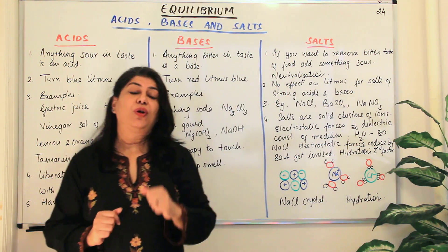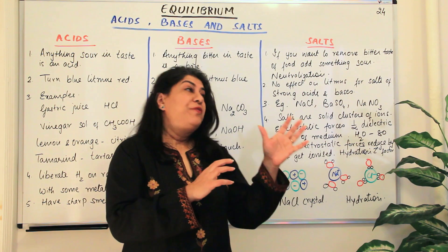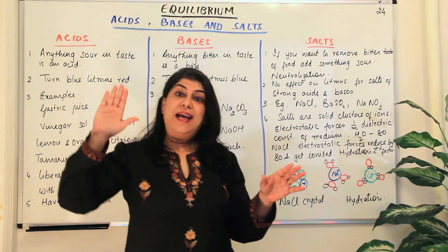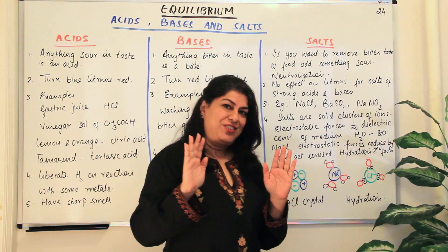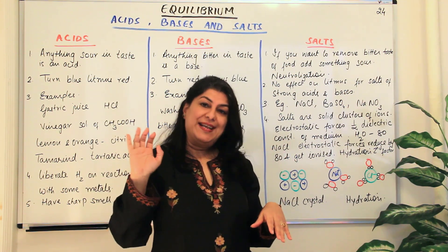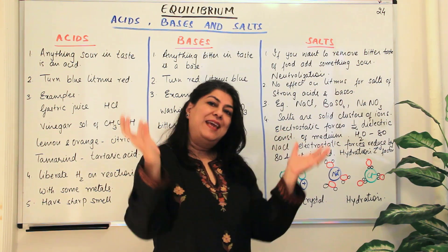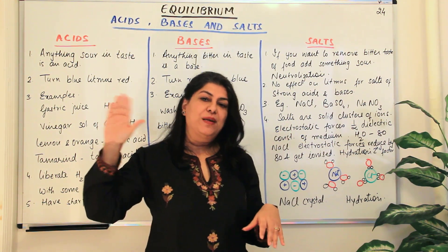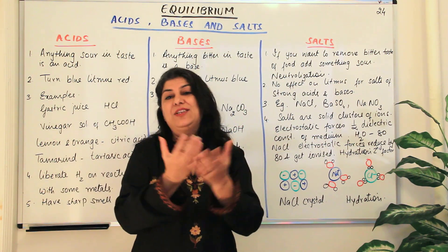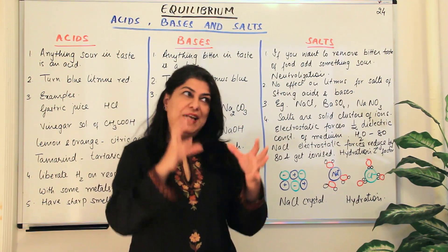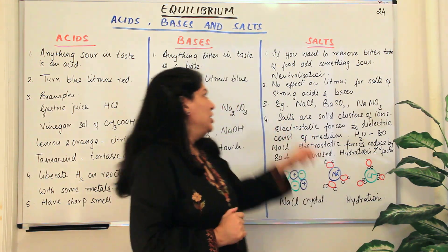We now come to salts. As I told you in part 23, when an acid reacts with a base the reaction is known as a neutralization reaction. The positive part of the acid and the negative part of the base combine — usually hydrogen (positive) and OH⁻ (negative) — to form water, which is neutral. The remaining positive and negative ions get together to form a salt.